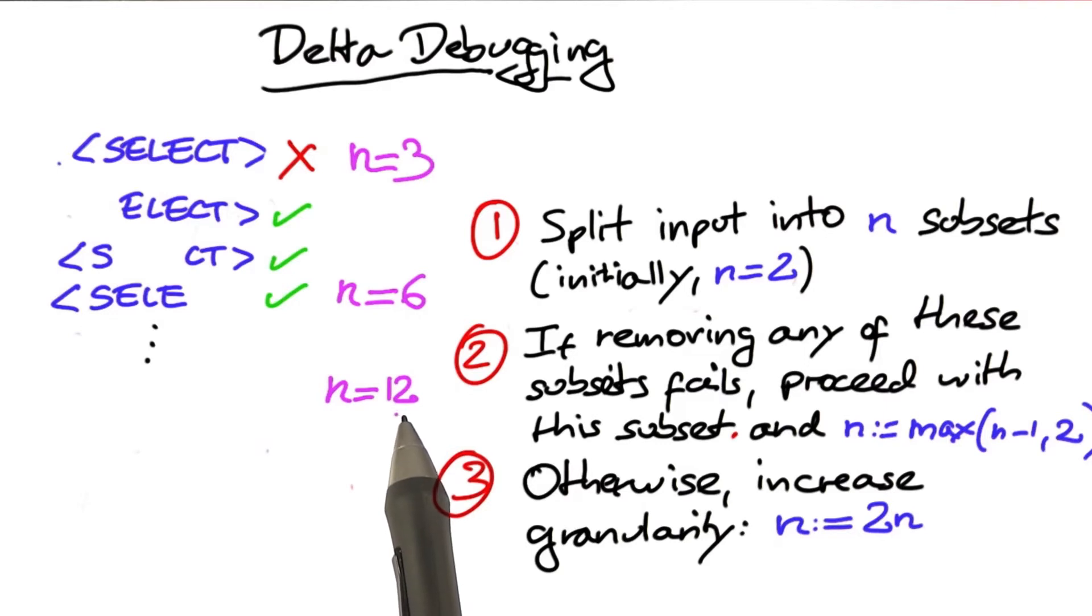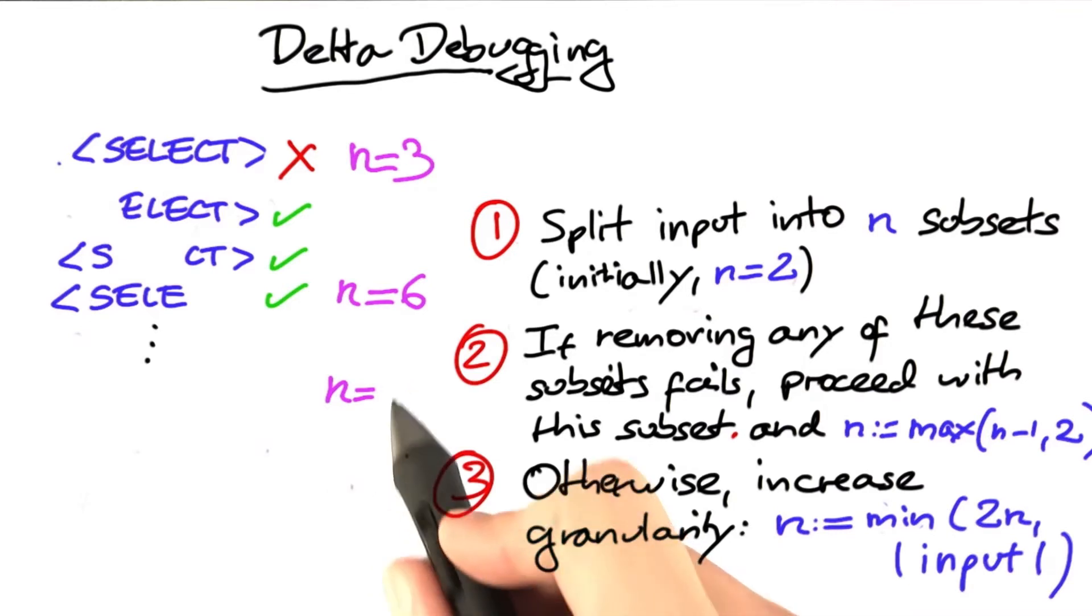So we're going to fix this a bit. By setting up this minimum function over here, we make sure that n cannot grow beyond the size of the input, which means that in our case, n would now be 8.